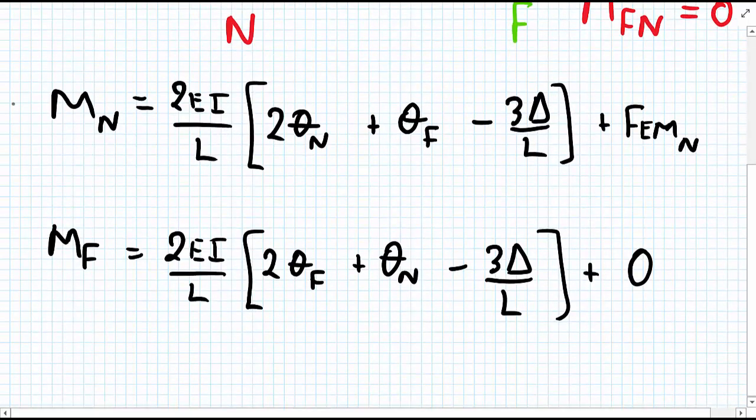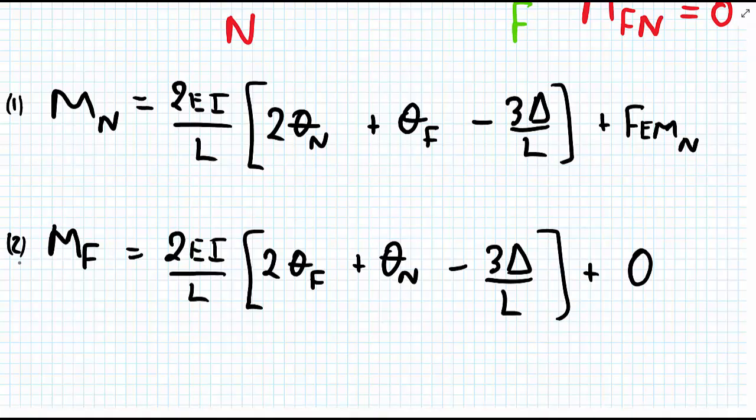I'm going to label these equations 1 and 2. Finally, one other thing I can look at with M_F is that this must all be equal to zero. A better way of writing this is by rewriting it: zero equals 2EI over L times [2θ_F + θ_N - 3Δ/L].